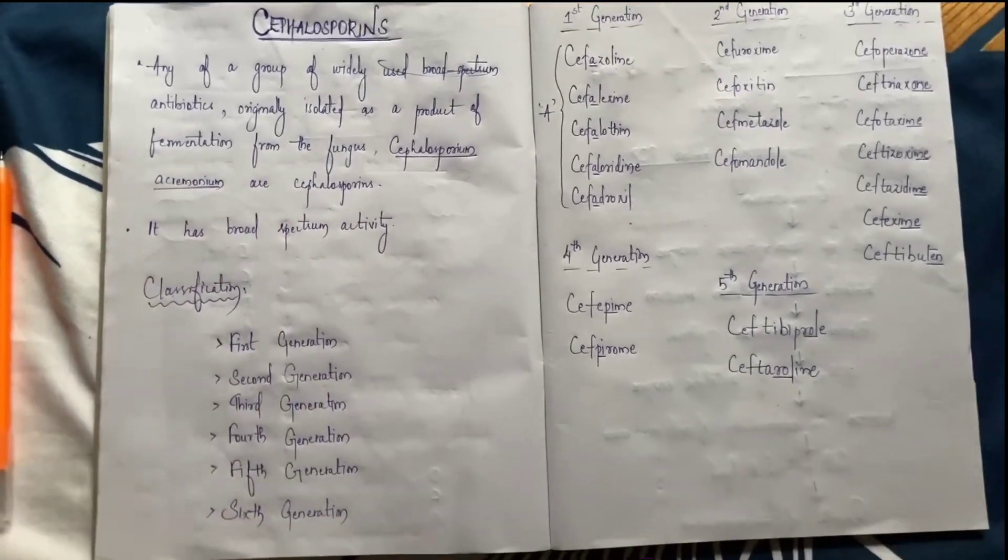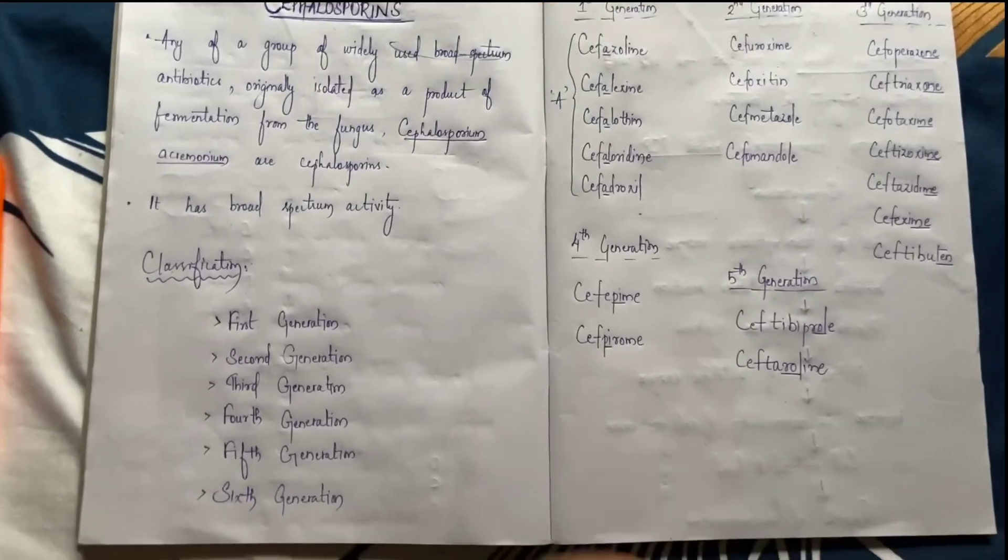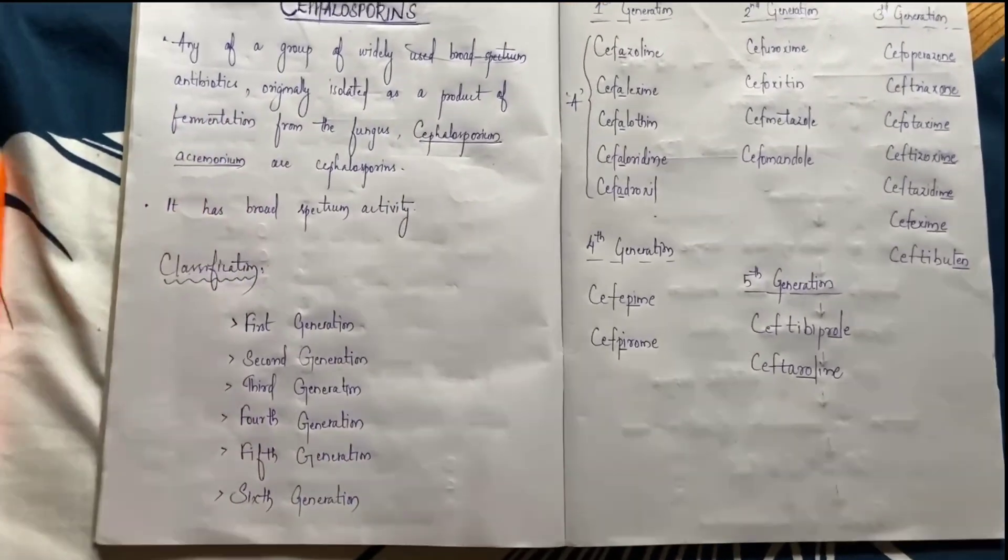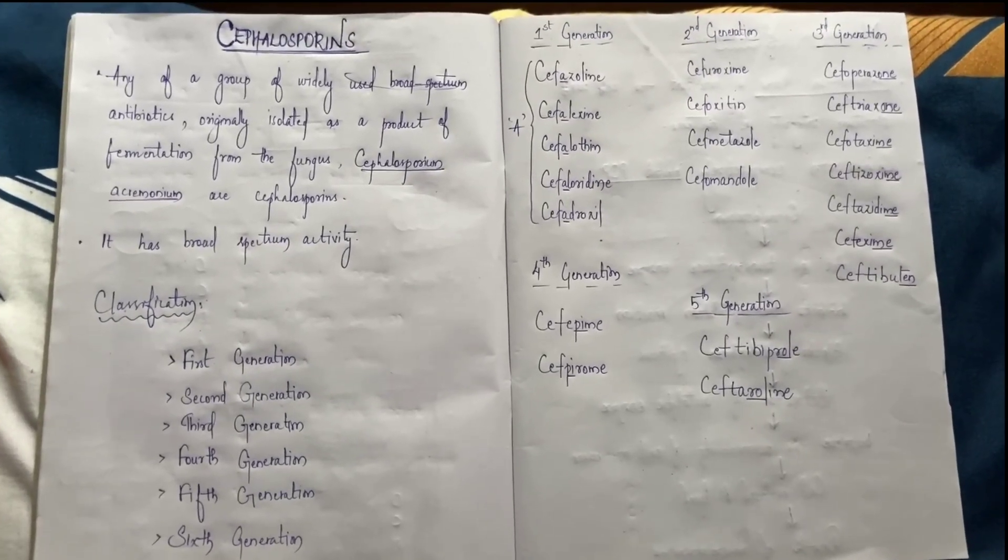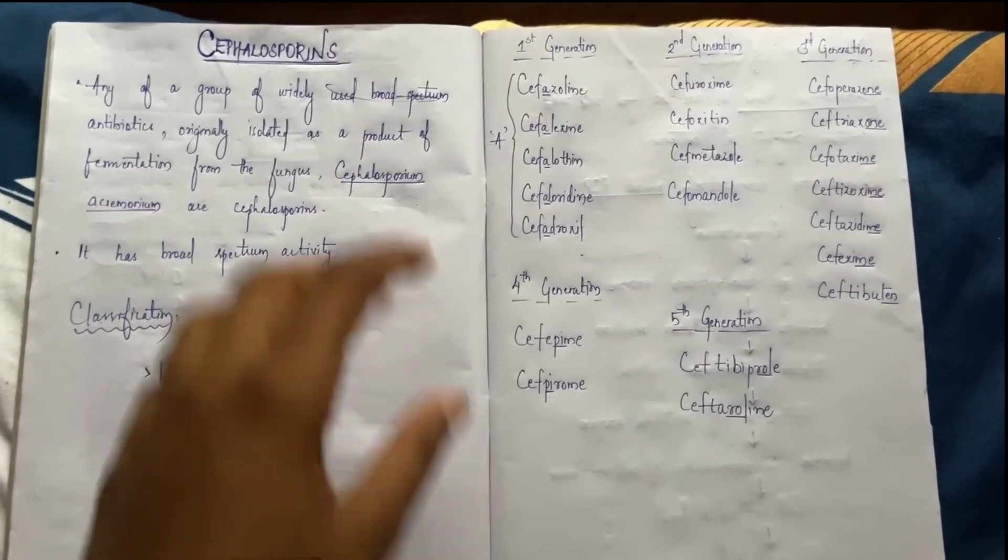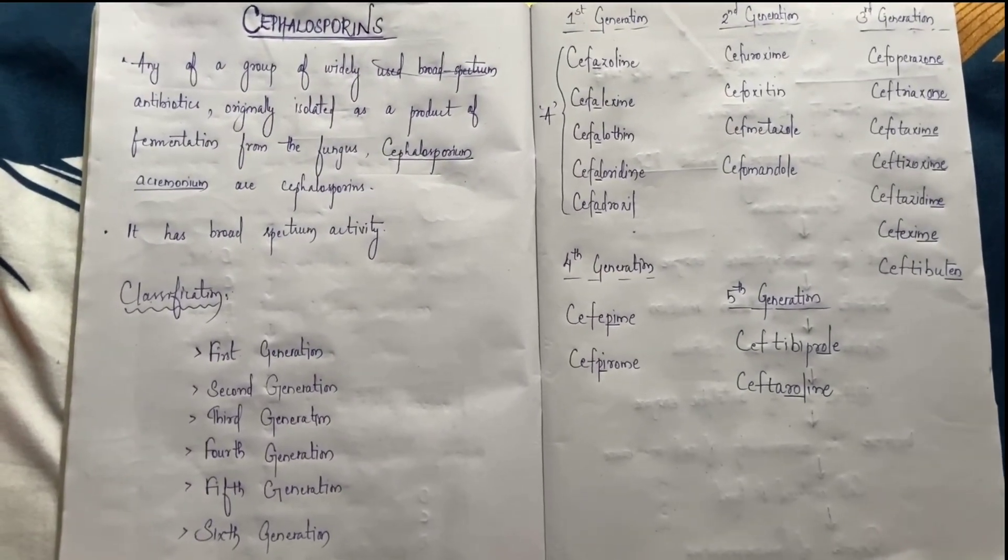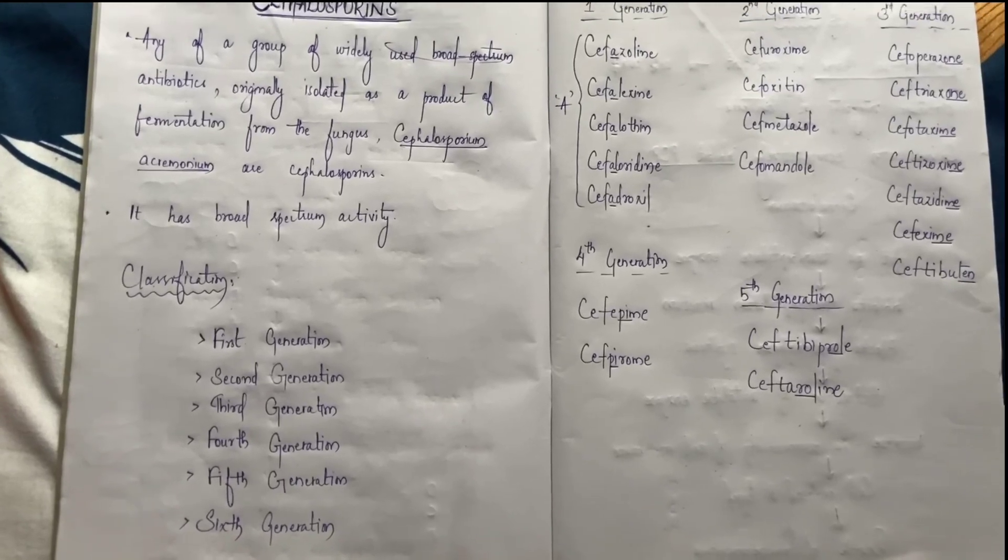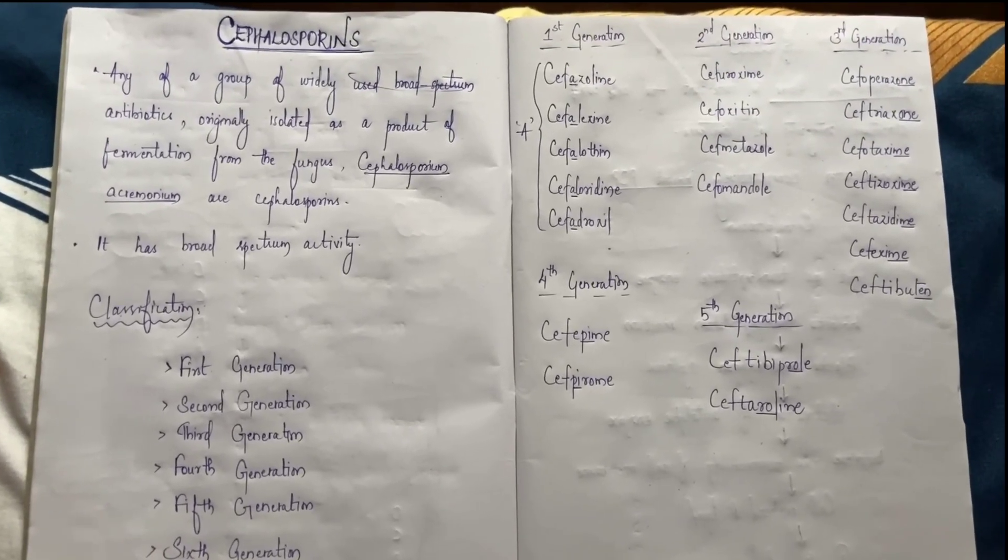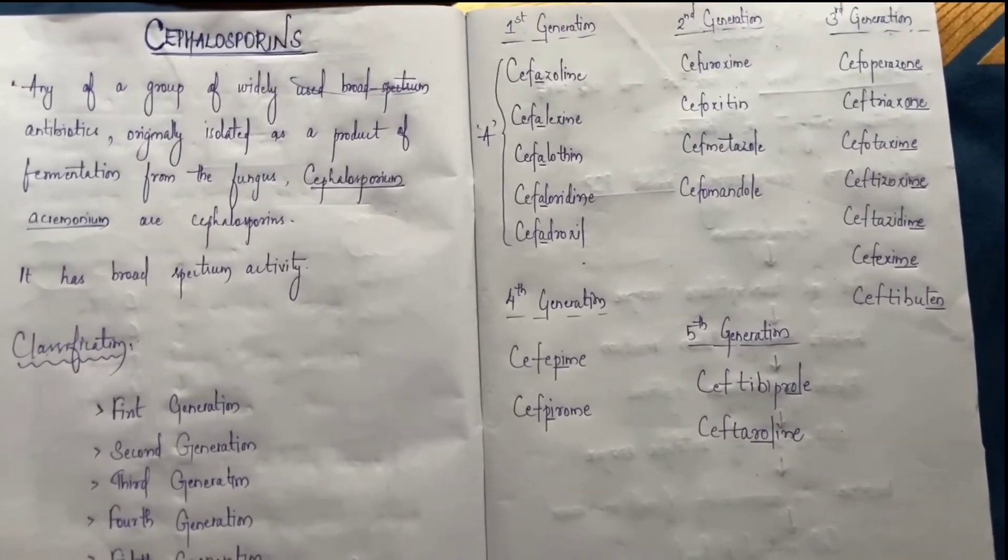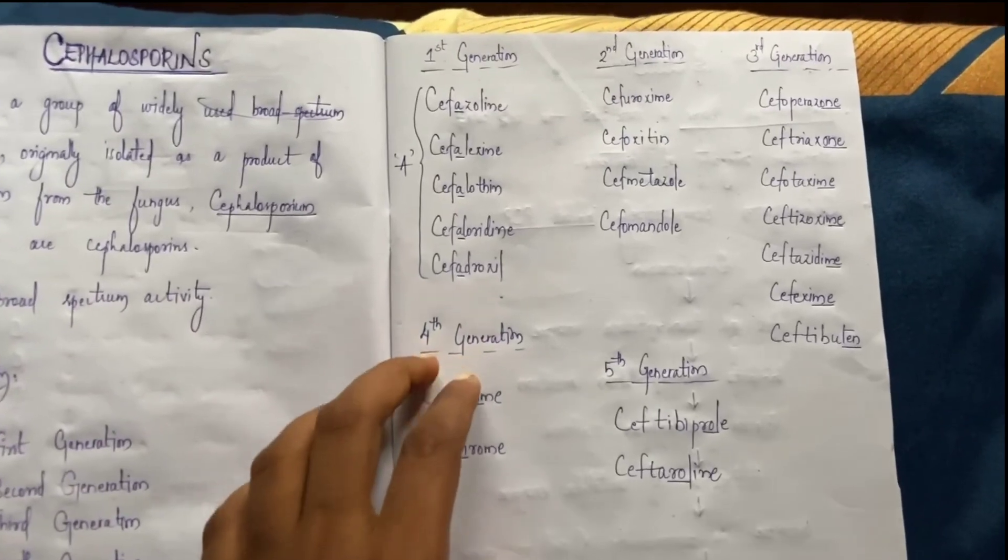Cephalosporin classification is an important exam question. The main item is classification, which is very hard because the overall classification includes first generation, second generation, third generation, fourth generation, fifth generation, and sixth generation. It's a bit difficult because of all these generations, but I will give you the most important mnemonics.